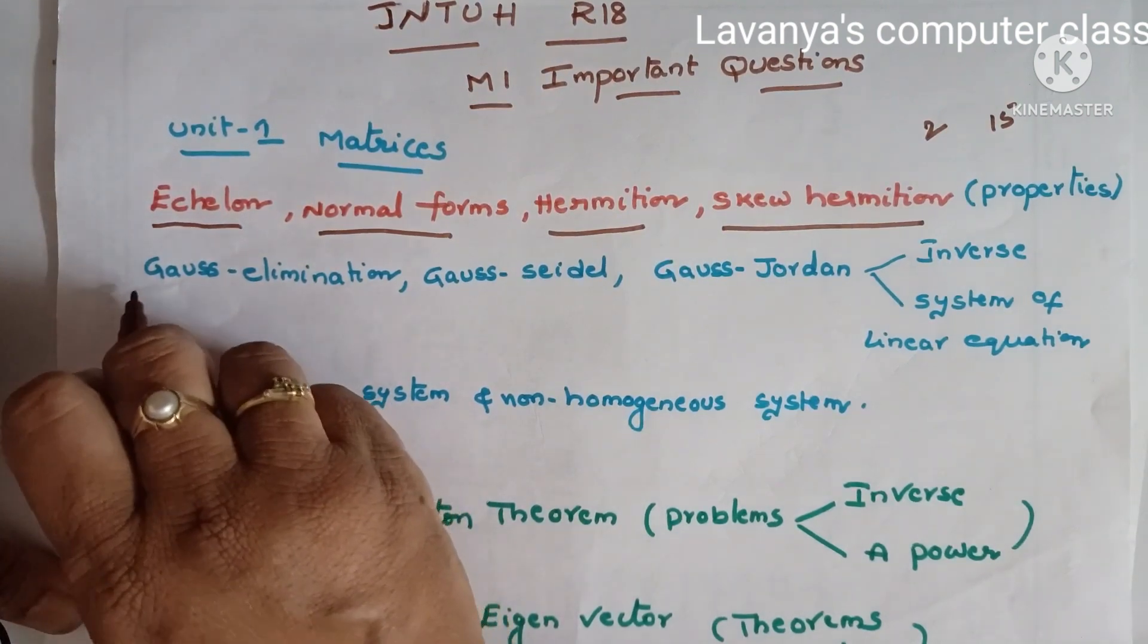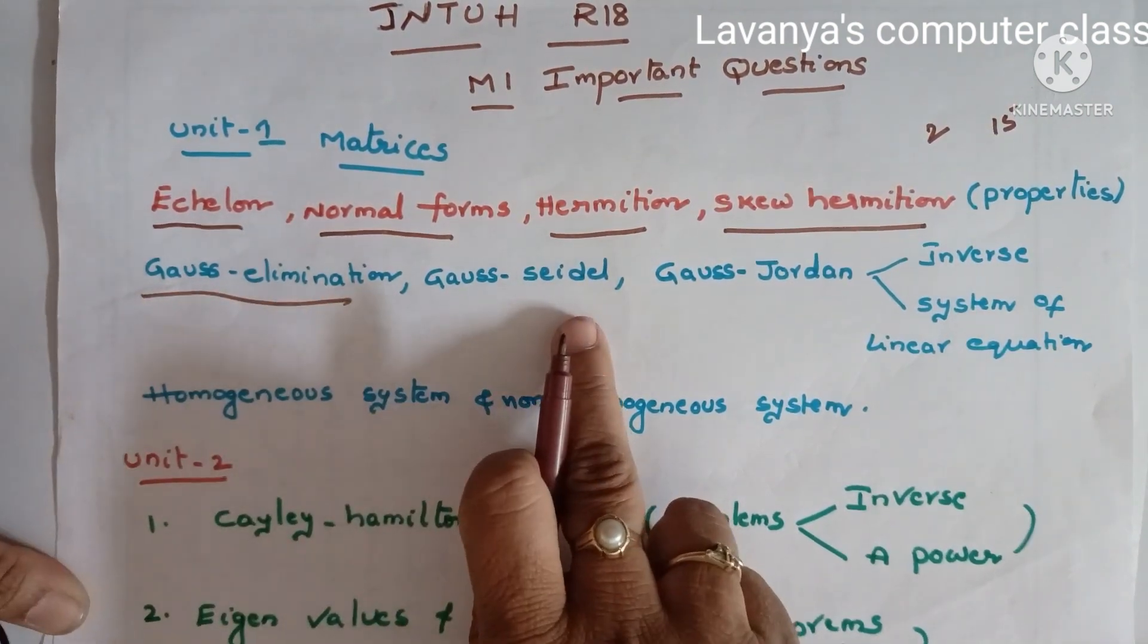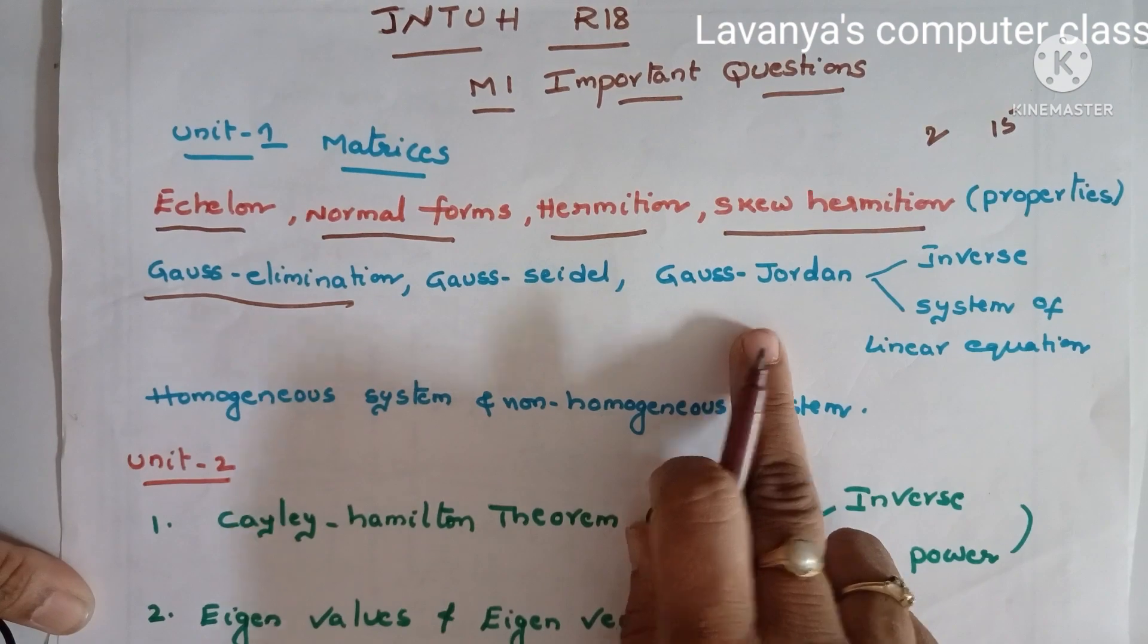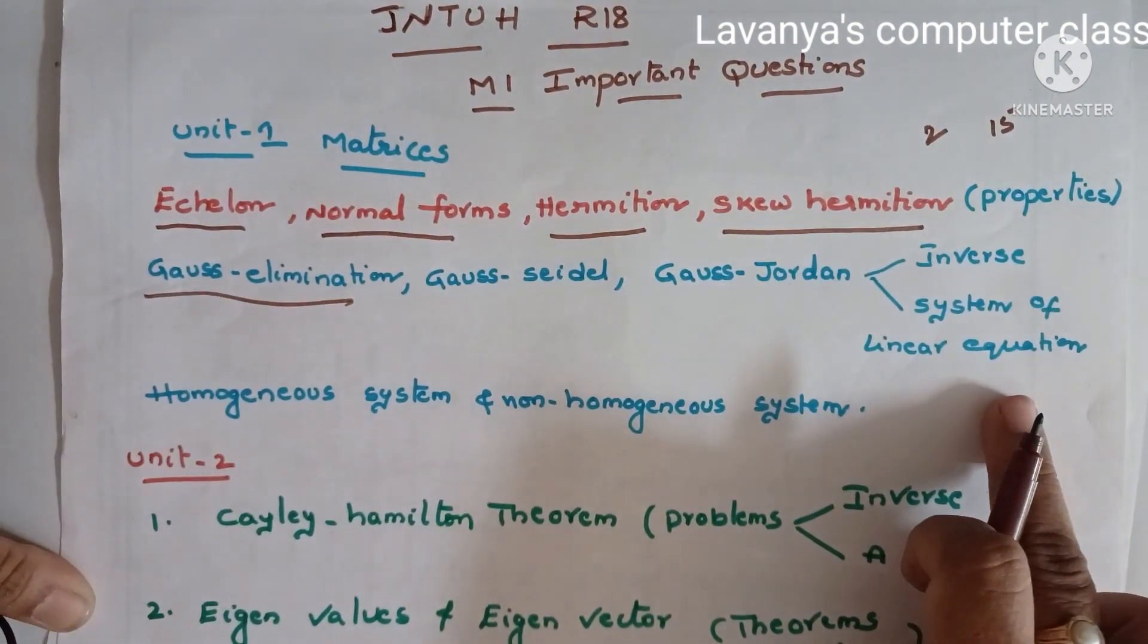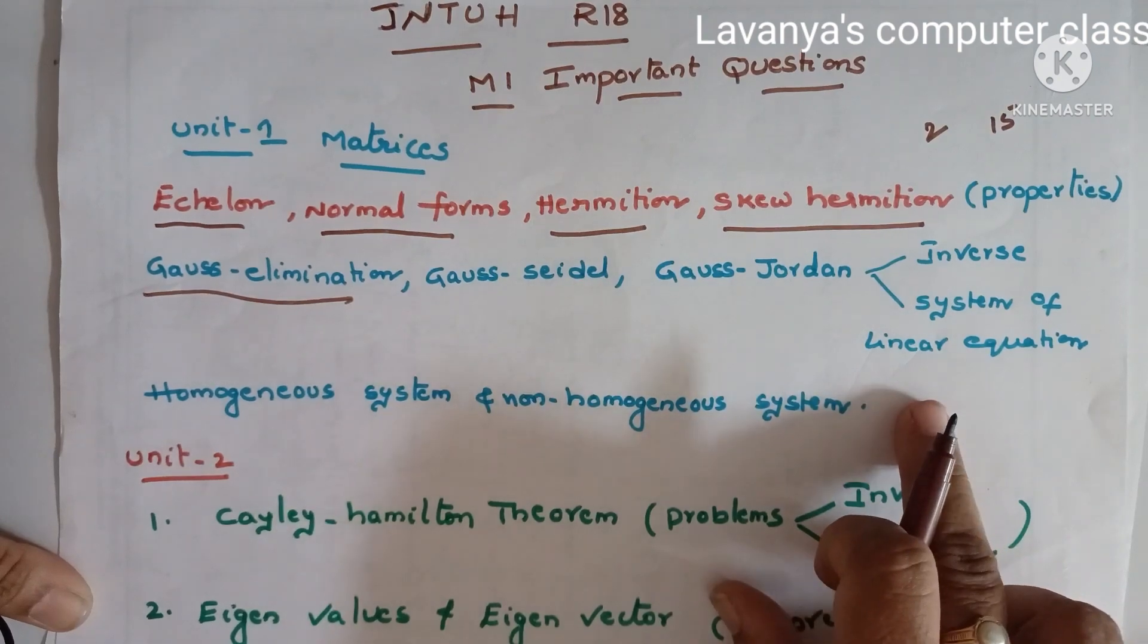Next one is Gauss elimination, Gauss-Seidel, and Gauss-Jordan methods. Using these methods, find inverse and system of linear equations. These are also important questions.